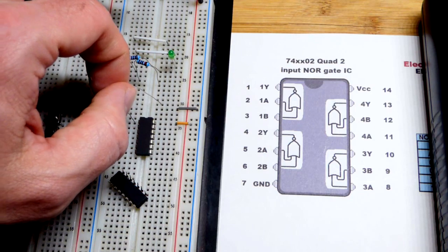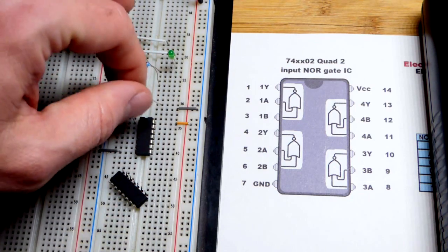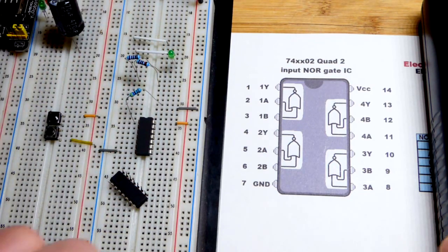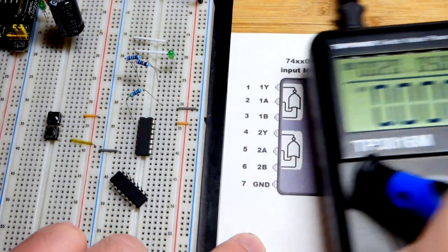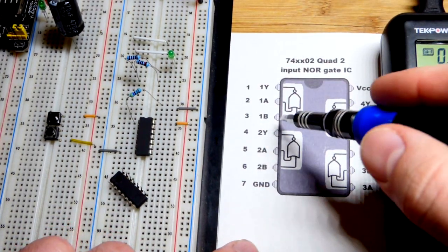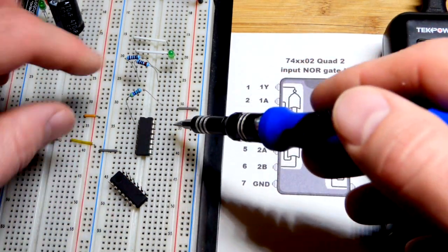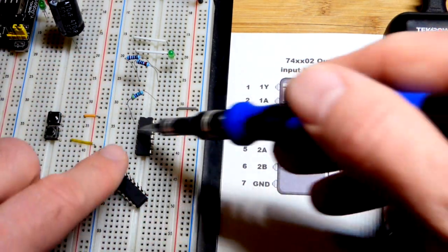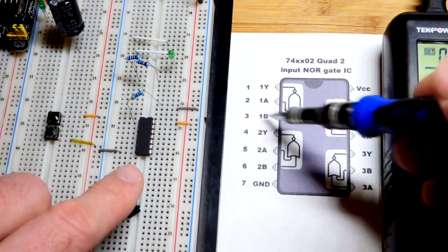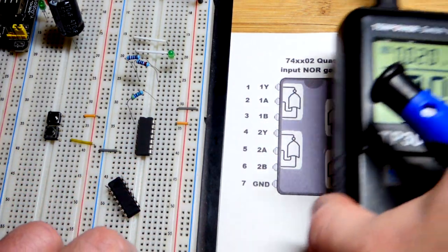First, we're going to look at the high-speed CMOS. This resistor is just floating right now. We're going to look at the power. We're just going to use this one up here. The output is pin number one, that's where the resistor is.